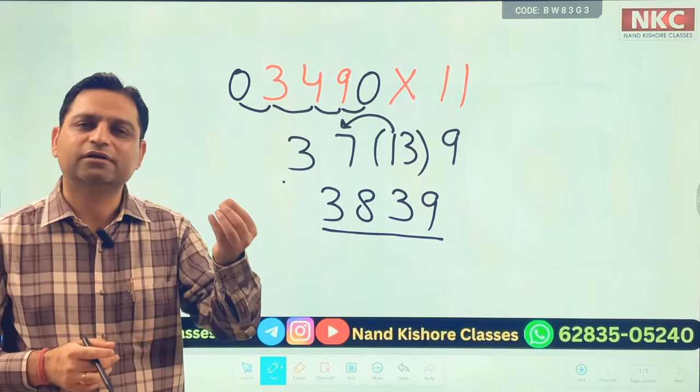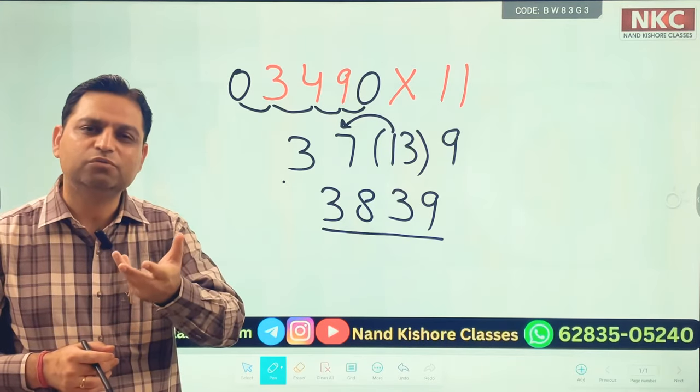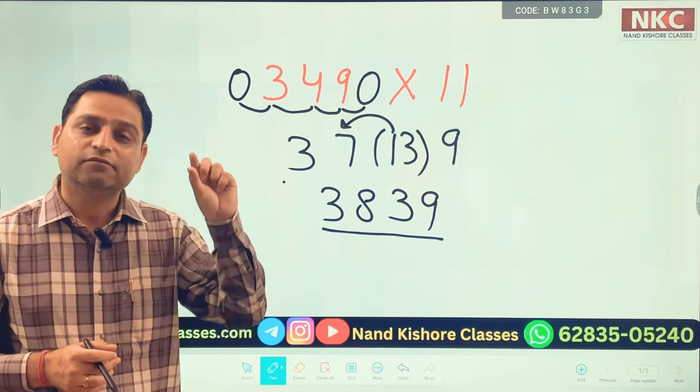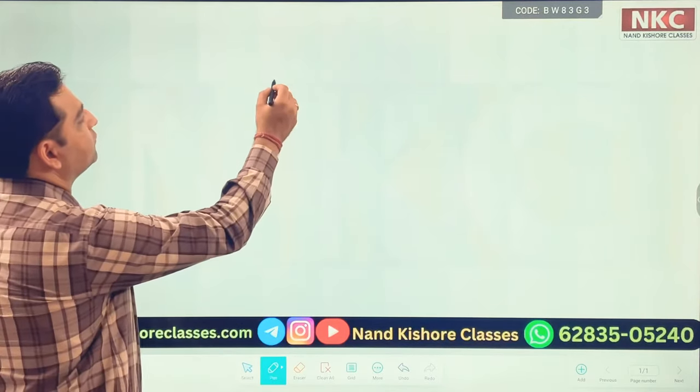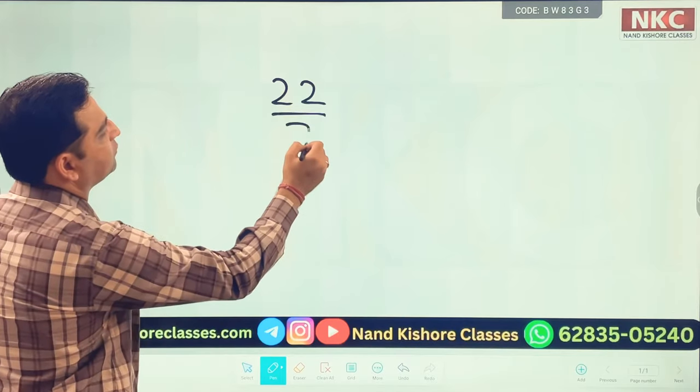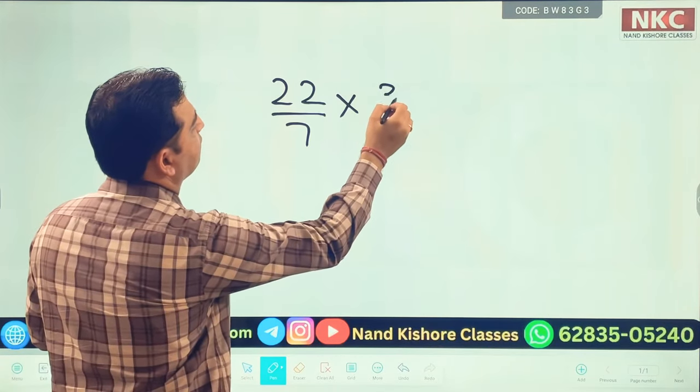And usually in any question you will see 22 can be cancelled with number 2 where it comes to 11. Whenever 11 comes, for example, let me give you an example. You will have a better idea. For example, you have something like this.